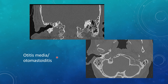Garden variety otitis media is just fluid within the middle ear cavity. The ossicles are intact, the scutum is intact, and there's just low density material in the middle ear cavity — really in the mesotympanum or hypotympanum. You usually won't see it in the epitympanum without seeing it elsewhere due to gravity. When you see otitis media, make sure the ossicles are intact and that the tegmen tympani, or the roof of the tympanic cavity, is intact. On axial views you have multiple opacified mastoid air cells with fluid levels, giving an otomastoiditis.